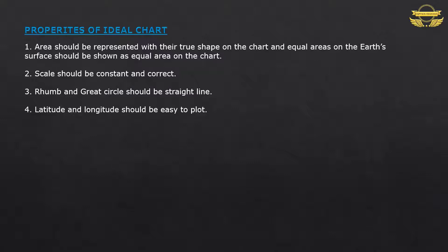4. Latitude and longitude should be easy to plot. 5. Adjacent sheets should fit correctly. Globe is a sphere, so if you cut it, it will not be in perfect shape. There will be some sheets, so all the sheets must fit each other correctly.